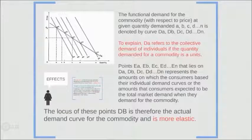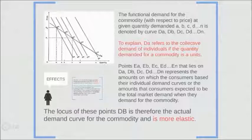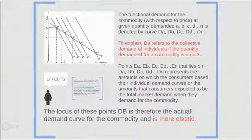The functional demand for the commodity with respect to price at given quantity demanded A, B, C, D, and N is denoted by curves DA, DB, DC, and continuously to DN. DA refers to the collective demand of individuals if the quantity demanded is A units. Points EA, EB, and further to EN that lie on the demand curve represent the amounts on which consumers base their individual demand curves — the amounts consumers expected to be the total market demand. The locus of these E points on the D curves is therefore the actual demand curve for the commodity, and we can see that it is more elastic.